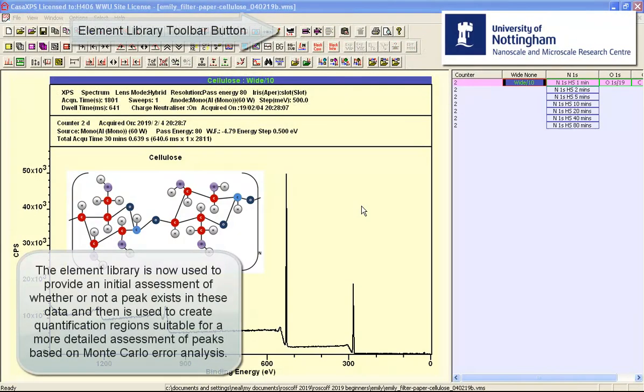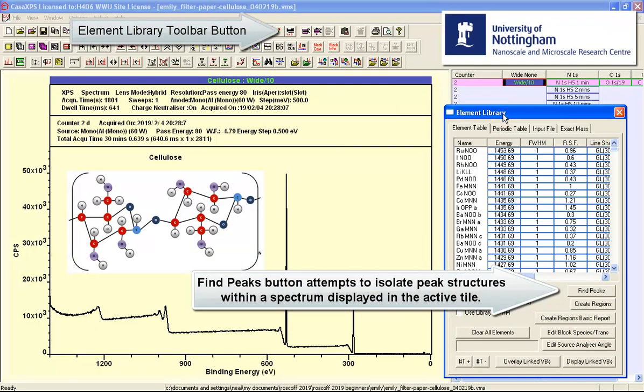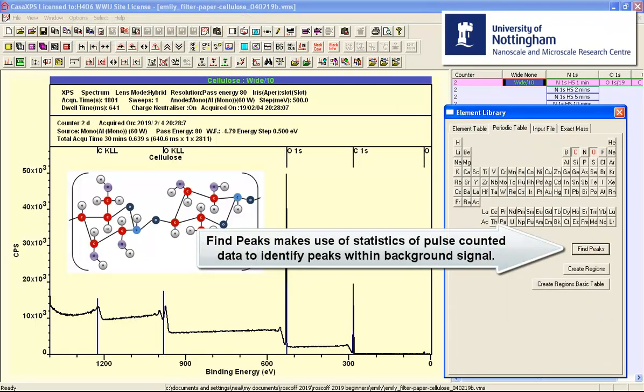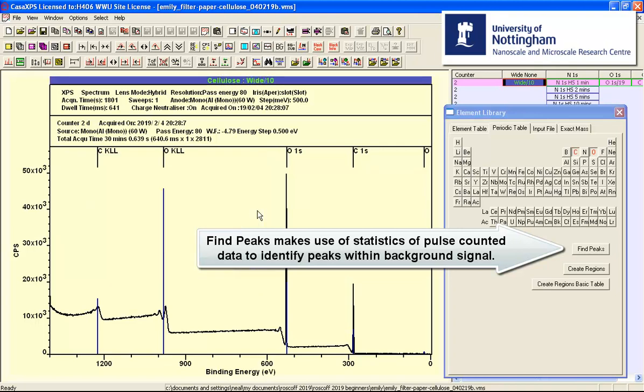One way to investigate whether we can actually identify nitrogen is to use the element library. The element library can be used to search for peaks.